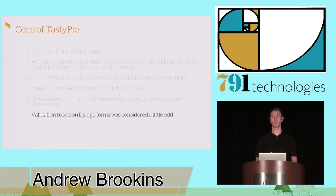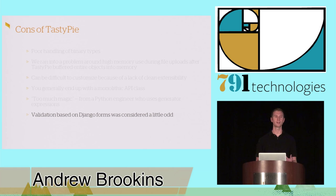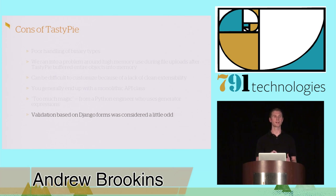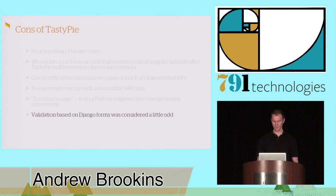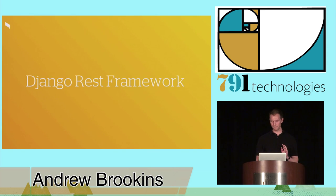For example, if you want to output the error messages generated from validation problems, you have to do some funky stuff — there's not a clean API to get simple text out of form errors. Or maybe there is in 1.7, but it was a little bit odd.